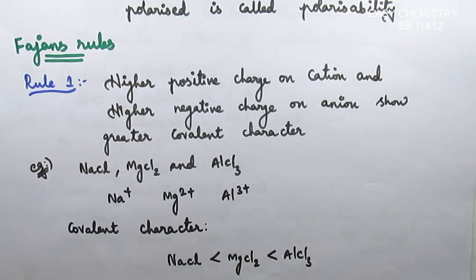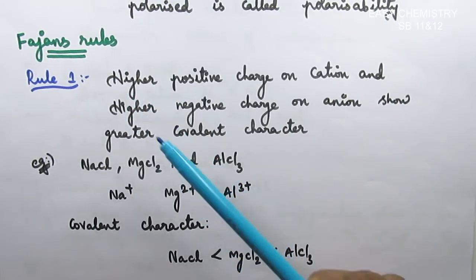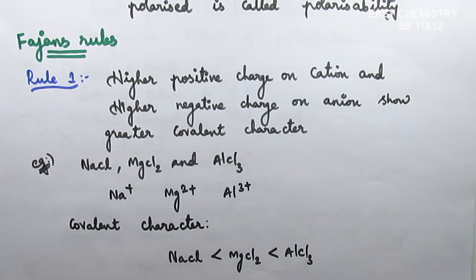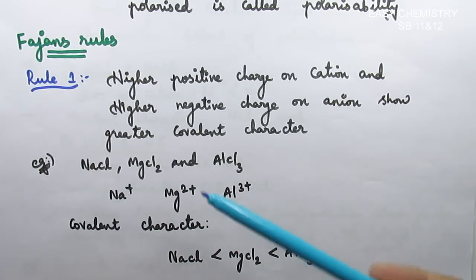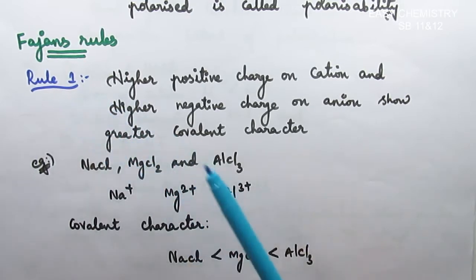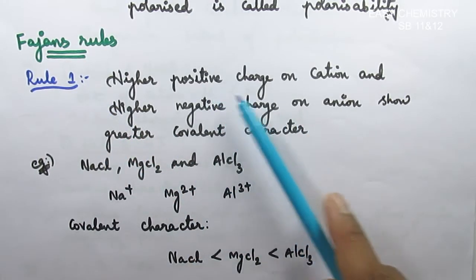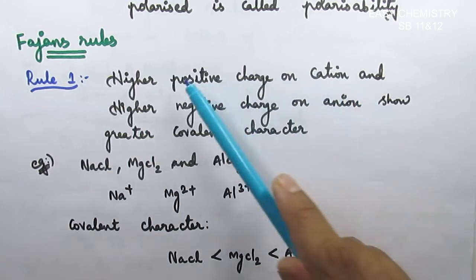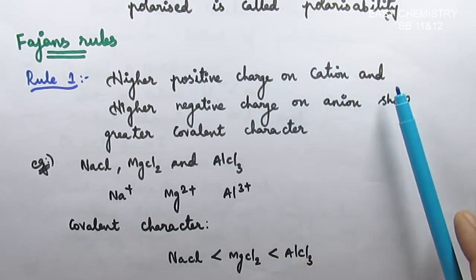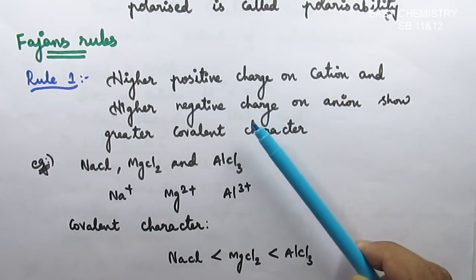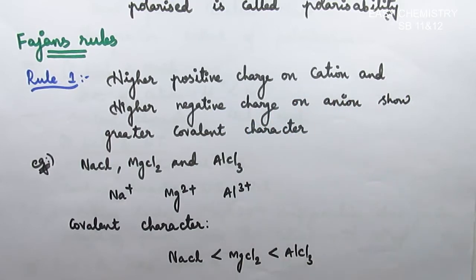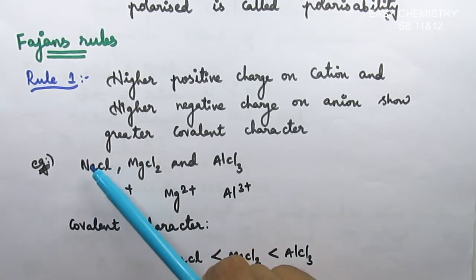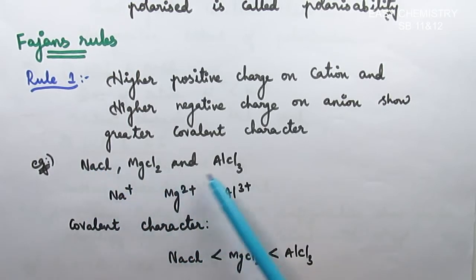To understand Fajans' rules, there are three rules. The first rule: higher positive charge on the cation leads to greater covalent character. For example, consider three compounds: NaCl, MgCl₂, and AlCl₃.